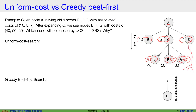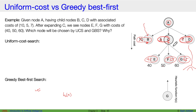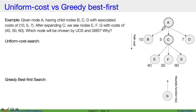With Greedy Best First Search, starting at node A, the possible paths are B, C, and D, but the node chosen depends not on path cost but on the heuristic function h(n). If the heuristic value of B is 2, C is 5, and D is 7, then node B would be expanded first when applying Greedy Best First Search.